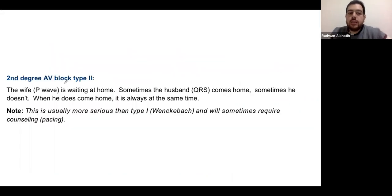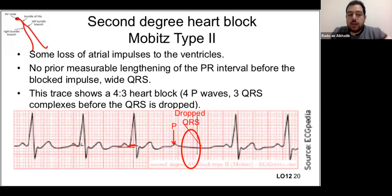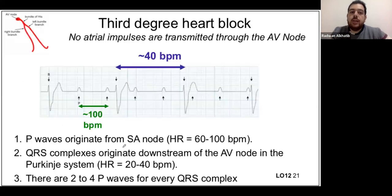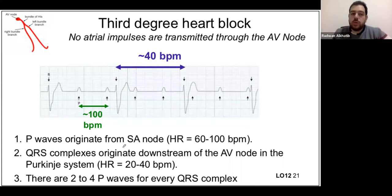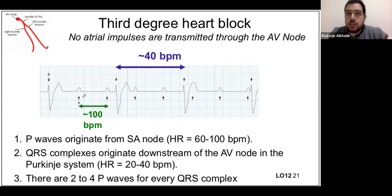Third degree AV block: complete block at the AV node — no electricity passes whatsoever between atria and ventricles. The atria contract by themselves and the ventricles contract by themselves. This is the worst type of heart block and the patient must have a pacemaker. The P waves conduct at a normal sinus rate of 60 to 100, while the ventricles beat independently at a much slower escape rate.